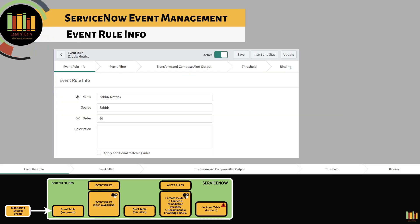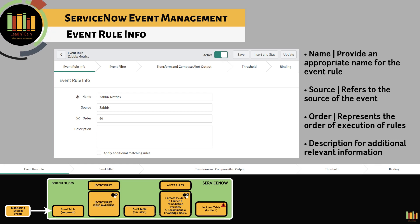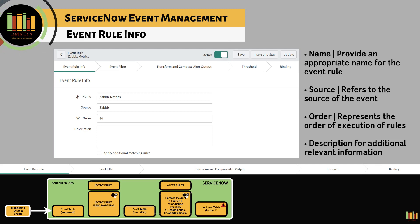An event rule contains the following tabs. The first is Event Rule Info, which filters events based on source — all sources are included if the source is blank. Fields include Name, which should be an appropriate name for the rule; Source, referring to the source of event generation; Order, representing the processing order with lower numbers having higher precedence; and Description. If Apply Additional Matching Rules is selected, additional matching rules will also be processed.